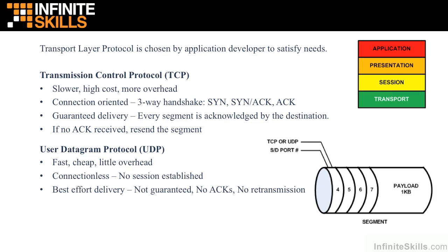Now typically it's the application developer who wrote the application that created the data. He's the one who knows what this data is and how important it is to get 100% of it to the destination. So the guy who wrote the program makes a determination whether at layer 4 of the OSI model — the transport layer — we will initiate the TCP protocol: high cost, slower.